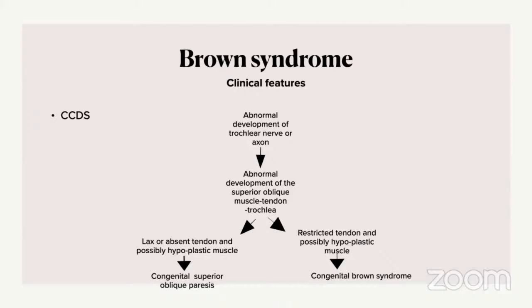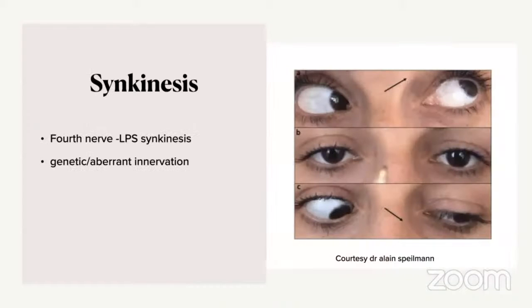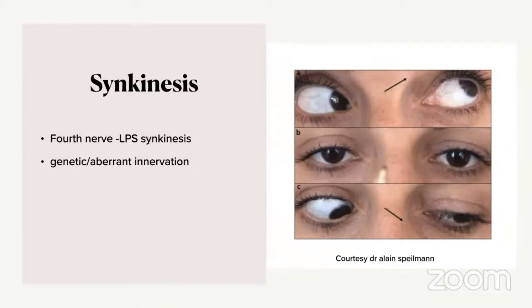There might be an abnormal synkinesis between the LPS and the superior oblique muscle. As you see in this slide, on levo elevation there was a limitation of the right eye, and the primary gaze eye is ortho. When the patient tries to look in levo depression, there is some amount of lid retraction occurring, suggesting a fourth nerve LPS synkinesis — possibly related to aberrant innervation or genetic causes. Dr. Kushner and Dr. Stephen Trapp also felt that the frenulum connecting the superior oblique to the superior rectus might become tight, causing lid retraction when the patient looks down.